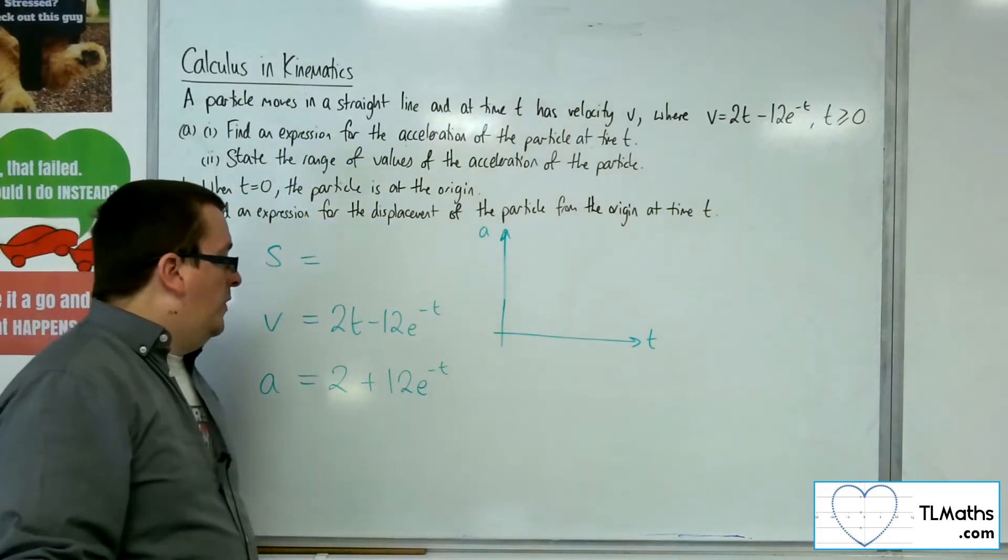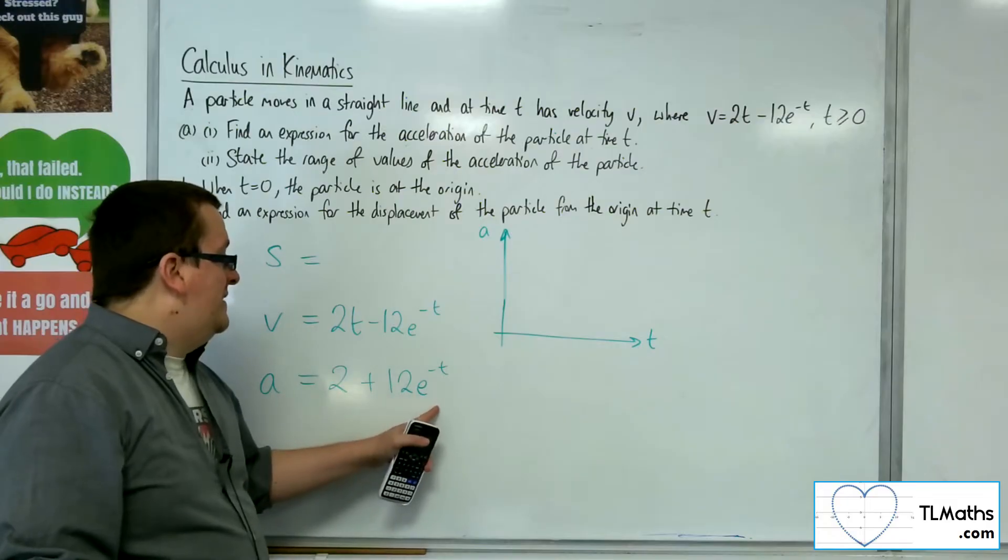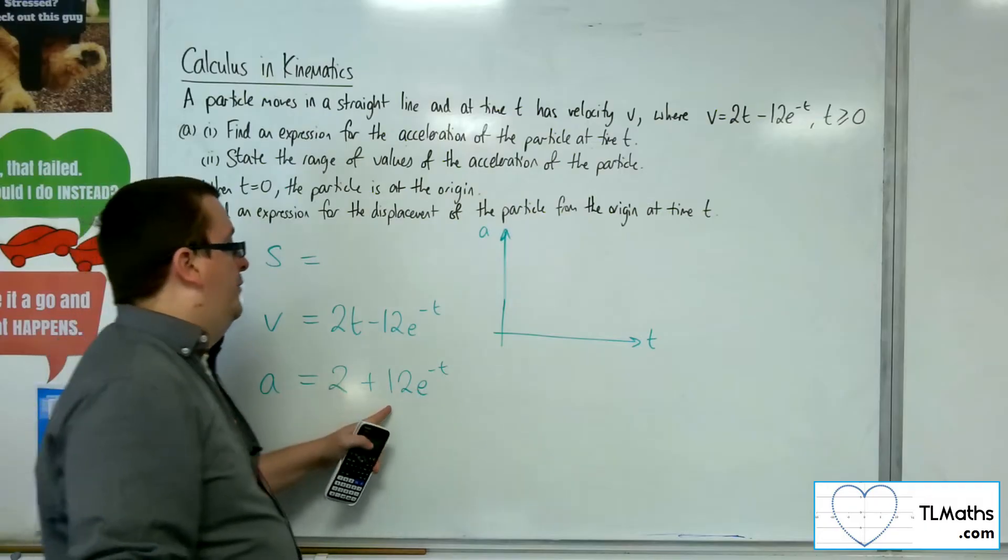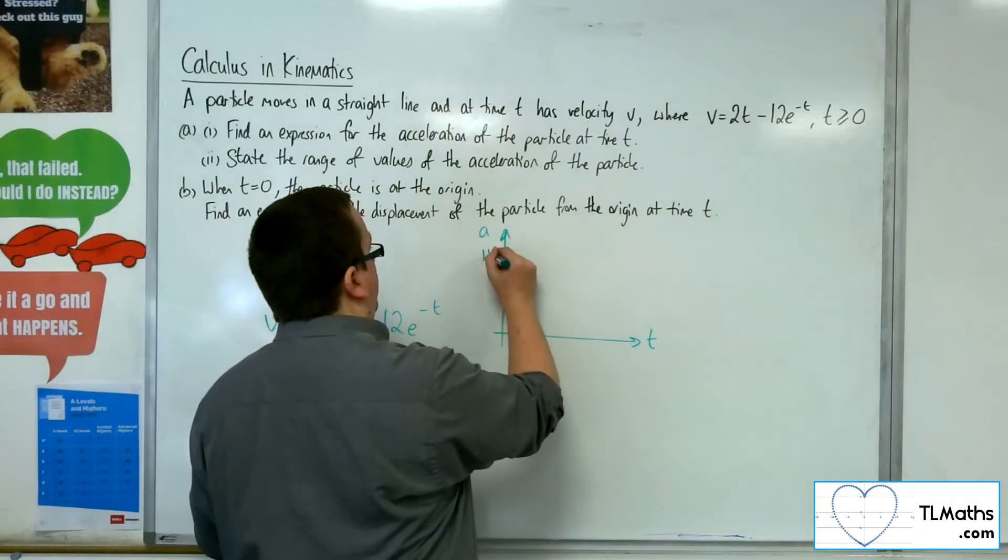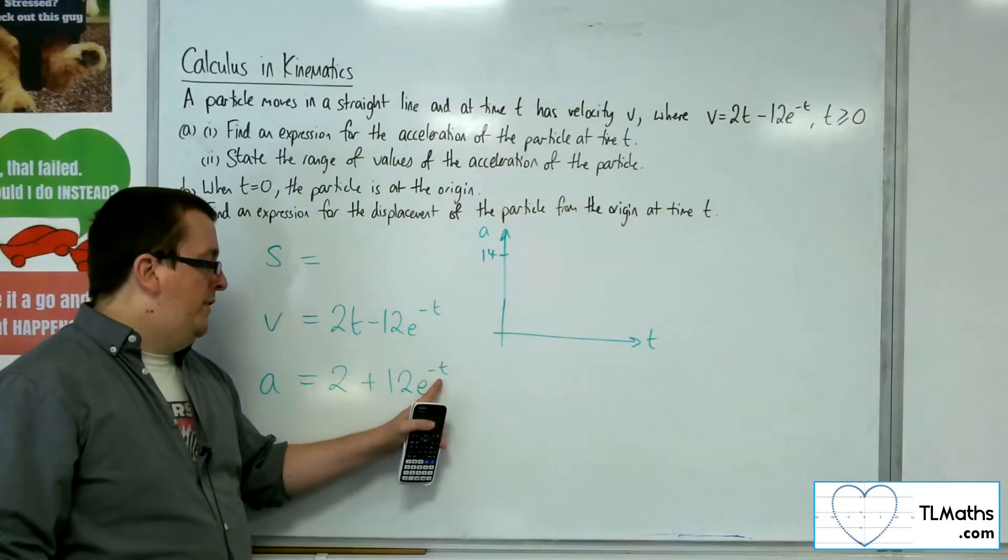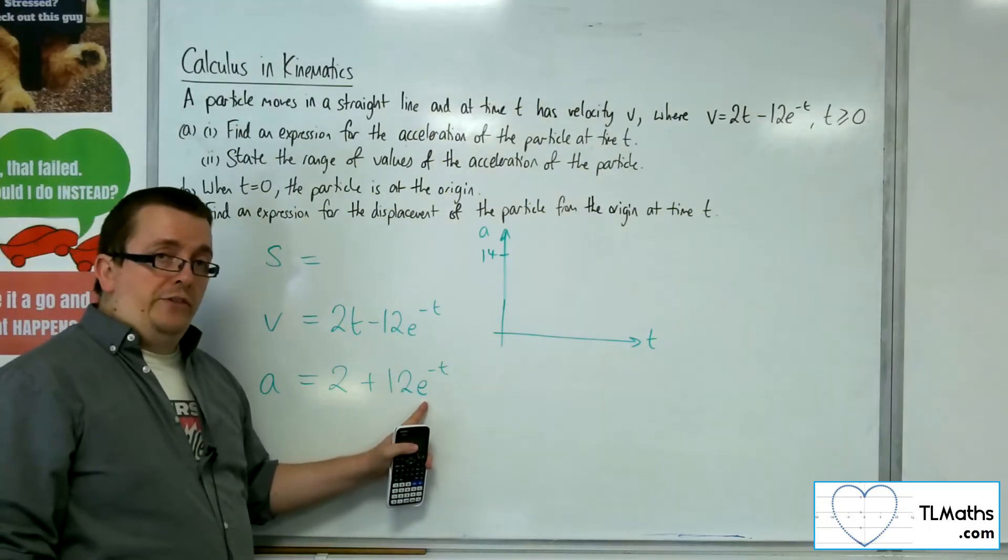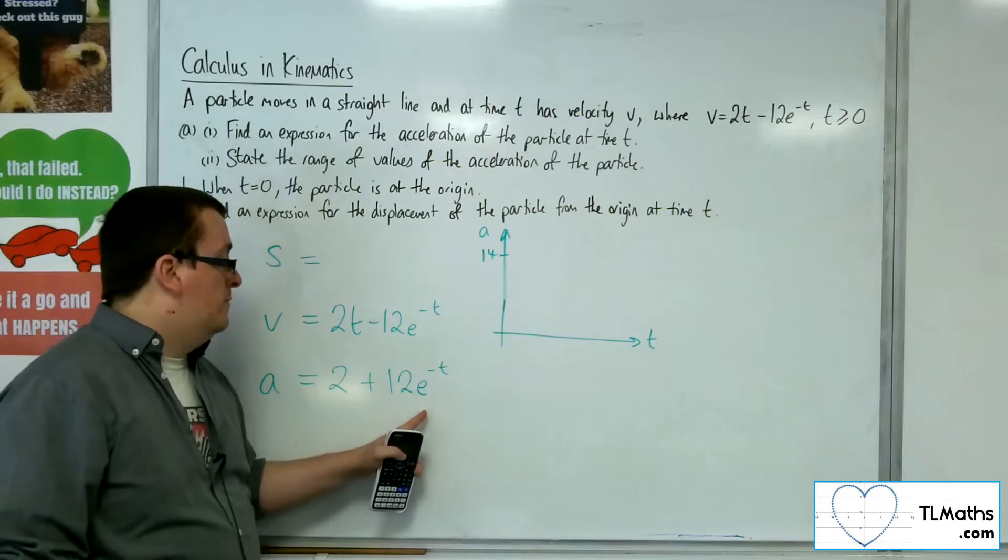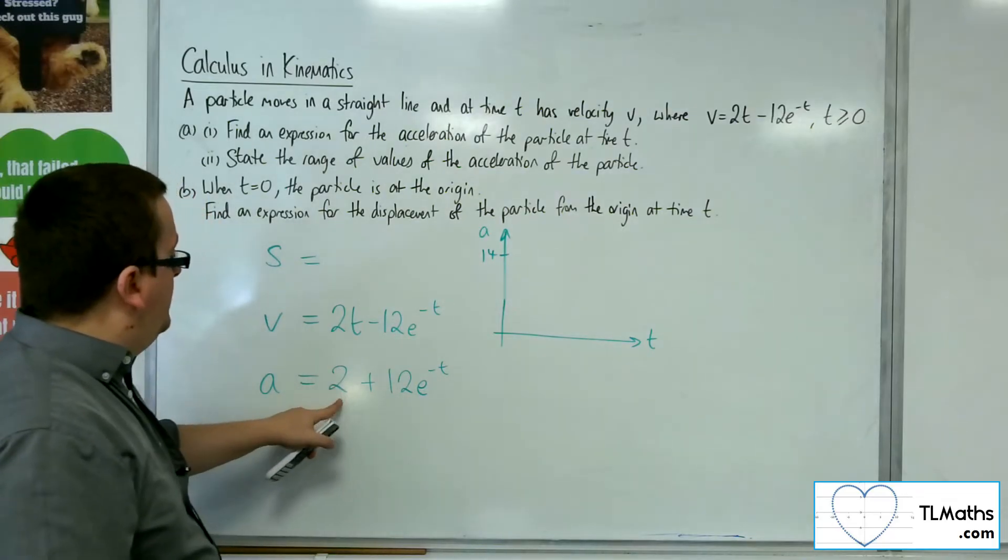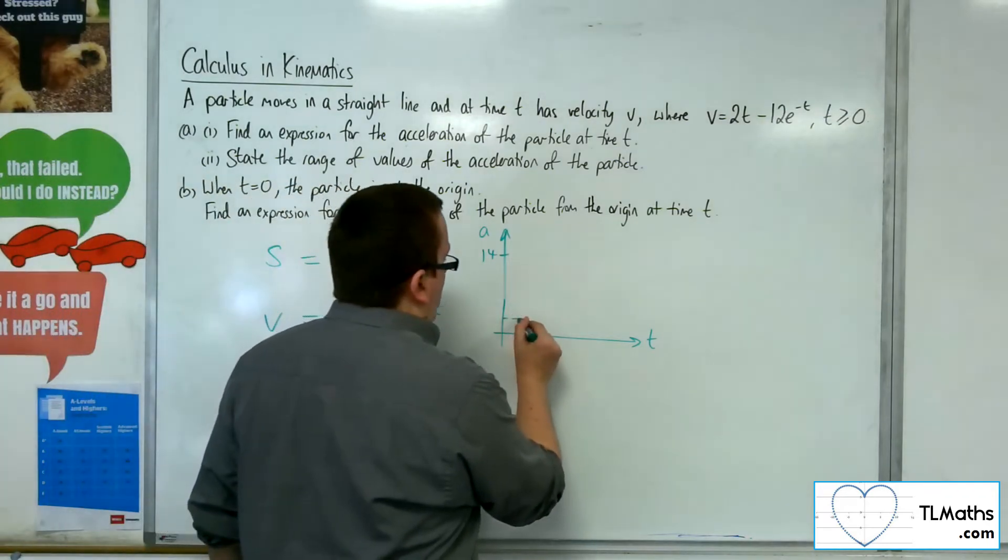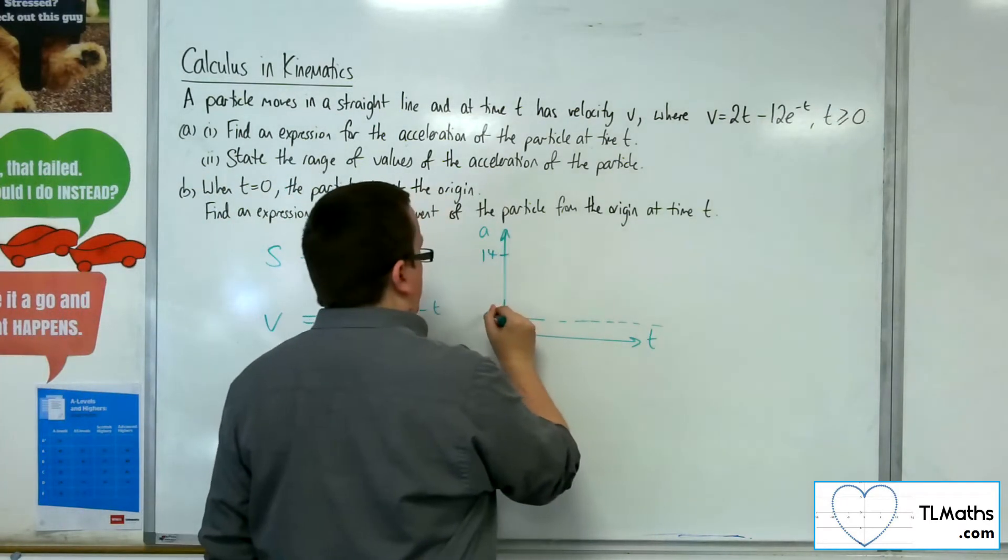Then the thing about this is that when t is 0, I'm going to get 2 plus 12e to the 0. So 2 plus 12, so 14. And as t increases, e to the minus t decreases. It gets closer and closer to 0. And so it's getting closer and closer to 2 plus 12 lots of 0, which is 2. So we have the asymptote at 2.